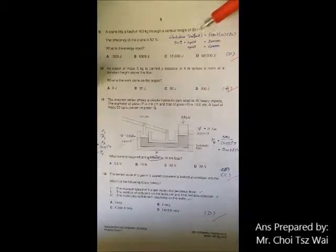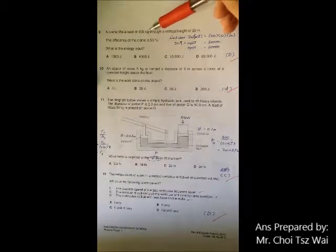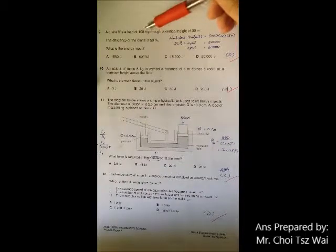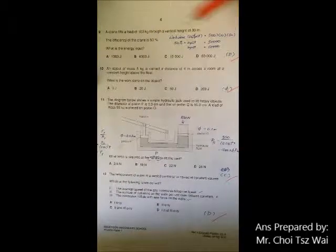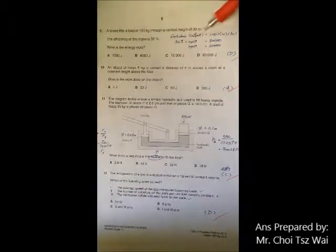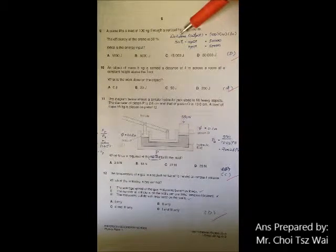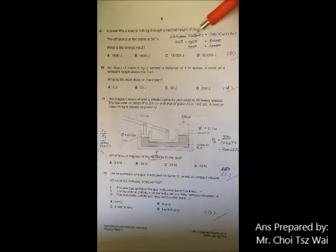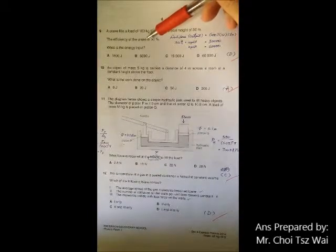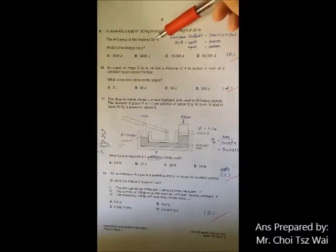This 100 kilogram, when you are using work done you have to convert this into weight. That's why for the work done output I multiply by 10 here. This output work done is actually from the crane, and the crane has an efficiency of 50 percent, meaning